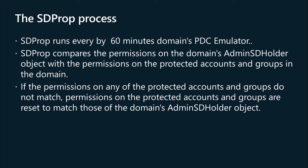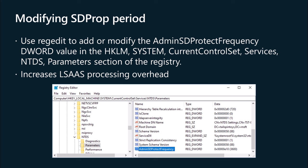Inheritance is disabled on the AdminSDHolder object so that permission changes to the parent objects do not change the permissions of AdminSDHolder. If you need to change the SDProp interval on the DC that hosts the PDC Emulator role, use regedit to add or modify the AdminSDProtectFrequency DWORD value in the HKLM\System\CurrentControlSet\Services\NTDS\Parameters section of the registry. The range of values you can configure is in seconds, between 60 to 7200 — one minute to two hours. To revert any changes you have made, delete the AdminSDProtectFrequency key, which will cause SDProp to revert back to the 60-minute interval.